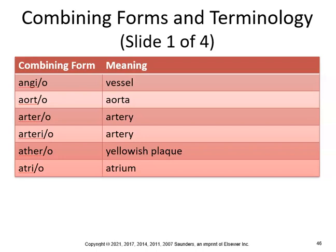Aortic — like aortic stenosis — means narrowing of the aorta. Arterio, so arteriosclerosis would be hardening of the arteries. Athero — that's atherosclerosis — referring to yellowish plaque.